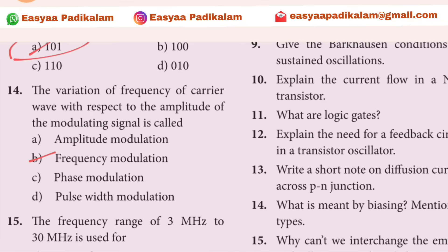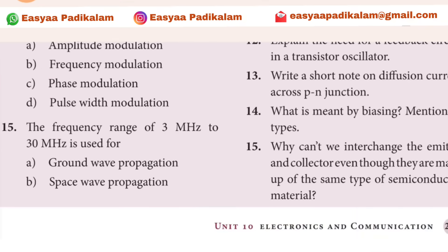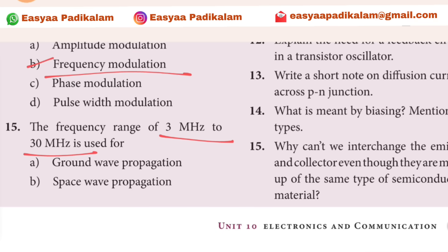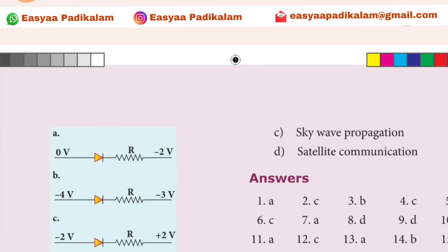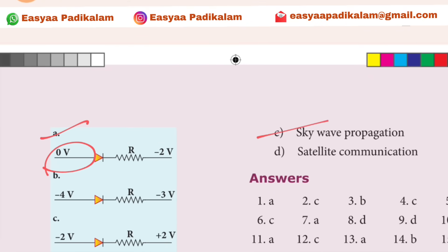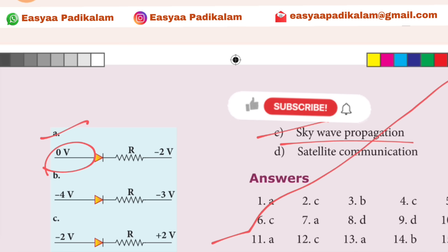The variation of frequency — what is frequency modulation? The frequency range of 3 MHz to 30 MHz. The answer is sky wave propagation.